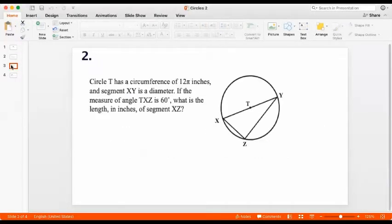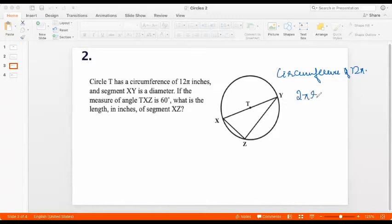Let's go to question 2. Circle T has a circumference of 12 pi inches. So this has a circumference of 12 pi. We can write this as 2 pi R is 12 pi. So R is 6. The radius of the circle is 6.